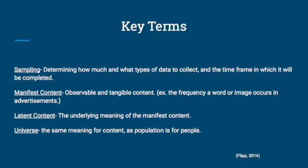The other is latent content. Latent content is the underlying meaning of the manifest content. Universe is a term used to describe the whole of the content — where you would use the word population for people, you would use the word universe for content.